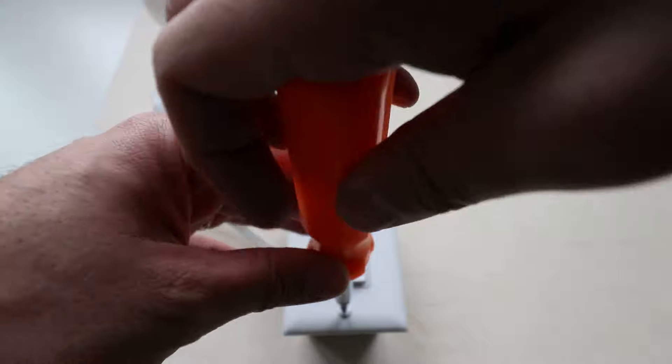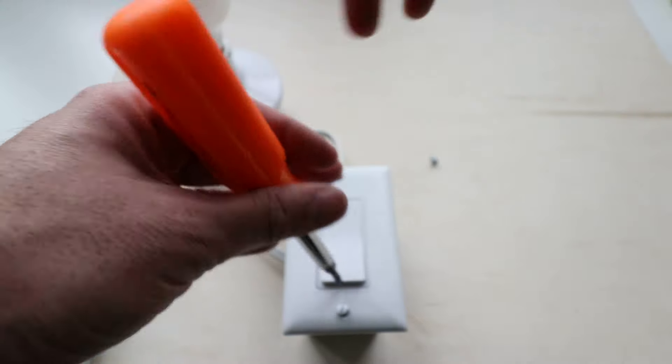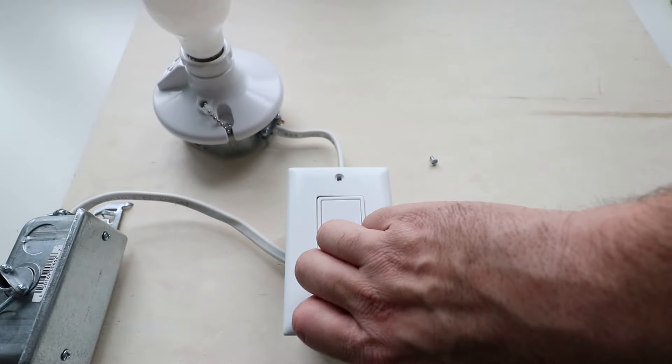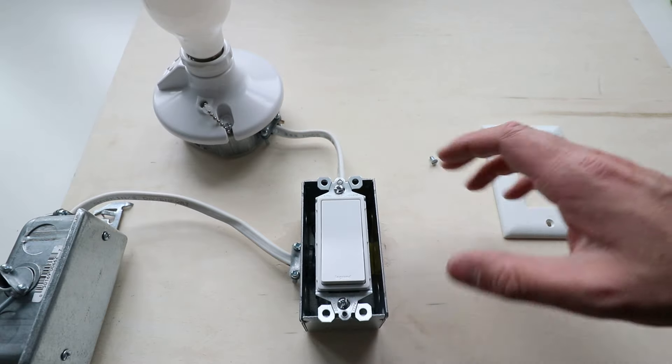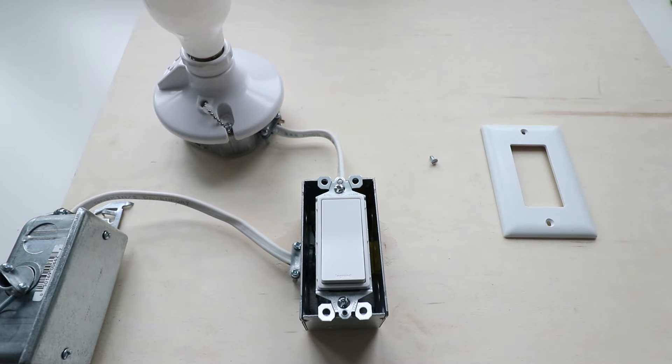So you just remove these two screws and that will get off your light switch cover plate. We've got those removed and now we are to the light switch.